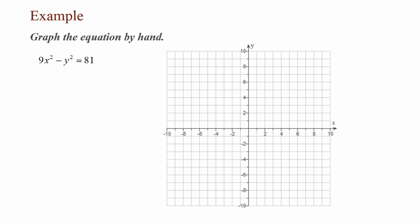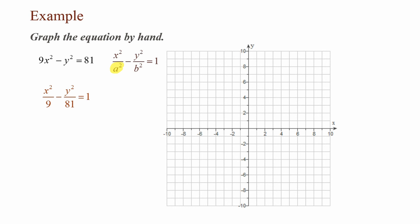In this example, graph the equation by hand: 9x² − y² = 81. I have a minus sign, so I have a hyperbola. Since x² is to the left of the minus sign, it matches x² / a² − y² / b² = 1. I divide both sides by 81: 9 / 81 reduces to 1/9, giving x² / 9 − y² / 81 = 1. Here a² = 9, so a = ±3.